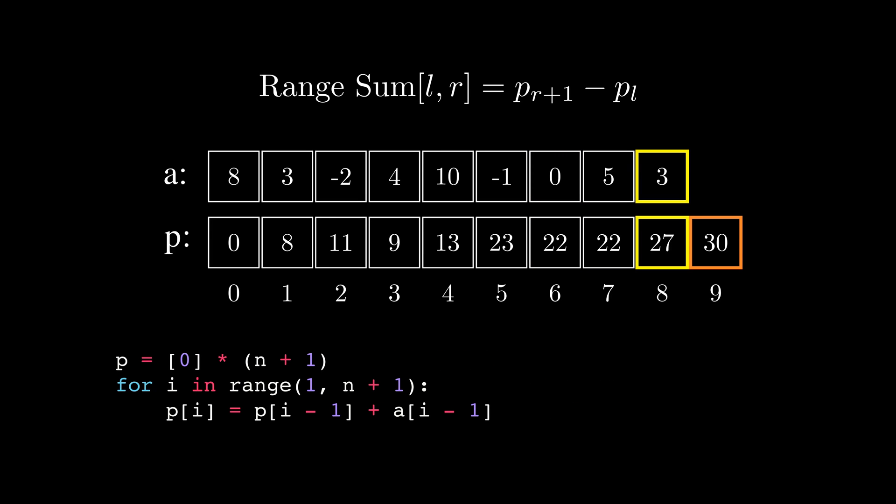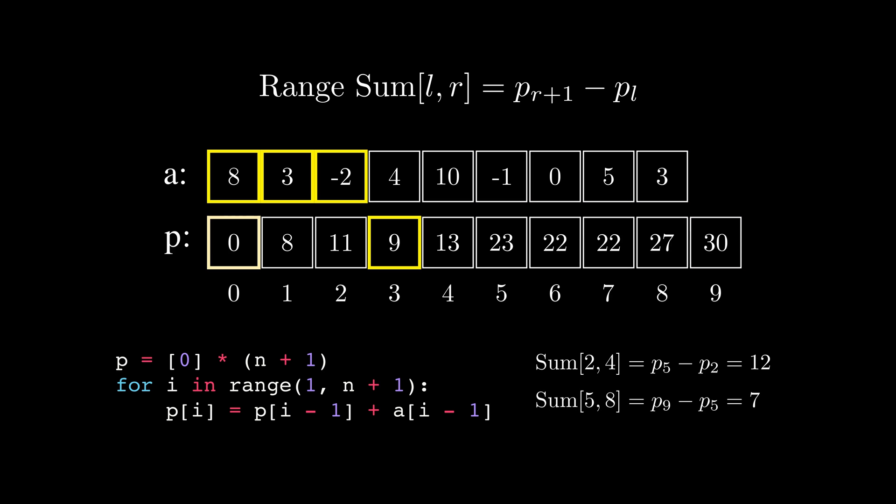To know the sum of elements from the second position to the fourth one, we can just subtract p of 5 from p of 2. To know the sum of the range from 5 to 8, we can subtract p of 5 from p of 9. Even the ranges including 0 are perfectly handled, and getting one element as well. As we add 1 to the right border, we can safely calculate the value of a single element using the prefix sum array. So getting the value for any range is just a single operation of subtracting two values, and therefore we can answer each query in O of 1 time.